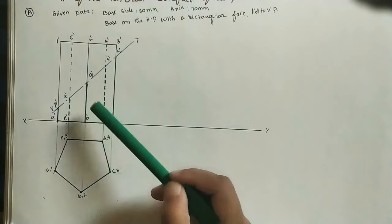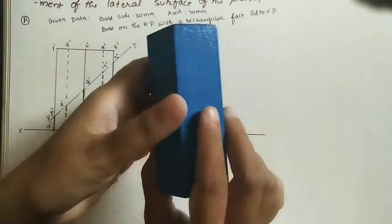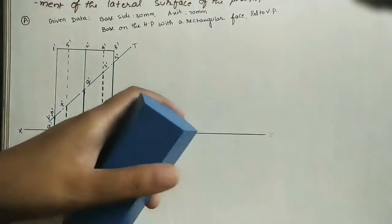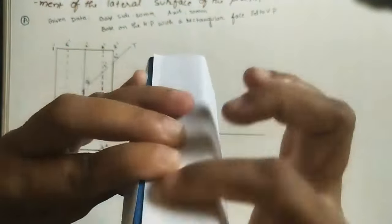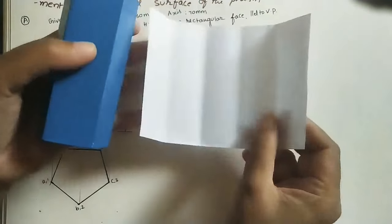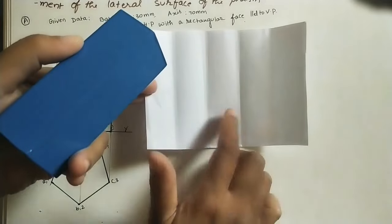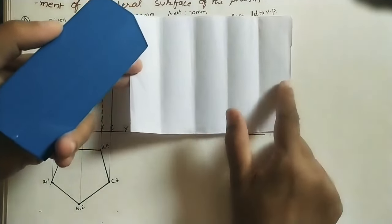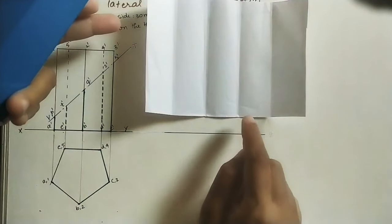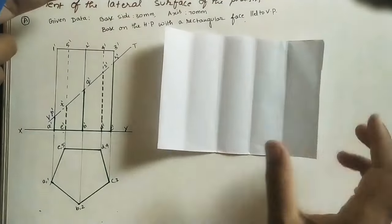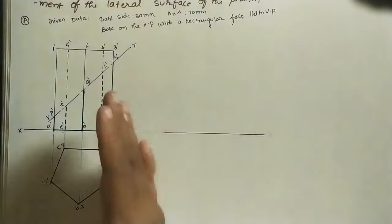Now we have to do the development of the surface. Development of surface means taking the entire surface and laying it flat on one plane sheet. For example, if you cover the entire prism surface with paper and then unfold it, you get the development. For this prism, there are five rectangular faces. Each side of the pentagon is 3 cm, so the total width is 3 × 5 = 15 cm, and the height is 7 cm.